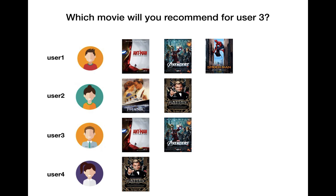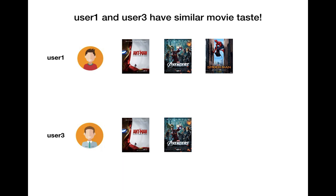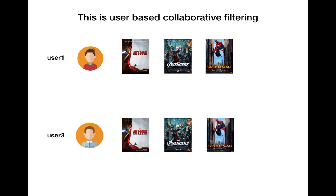Well, intuitively, we can find a similar user and recommend a movie from that similar user. You can find that user 1 is a similar user here because they both watched Ant-Man and Avengers. And since user 1 watched Spider-Man, we can recommend Spider-Man to user 3. This is user-based collaborative filtering.